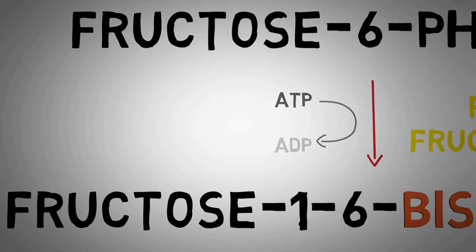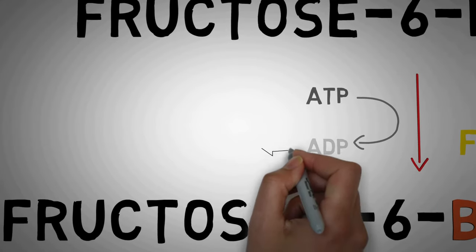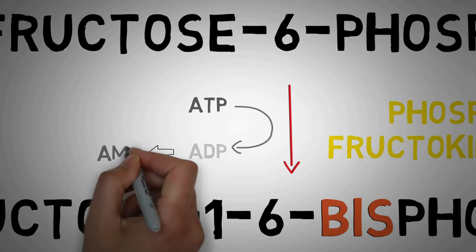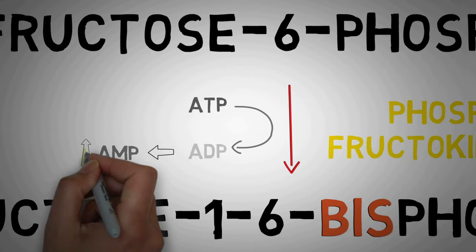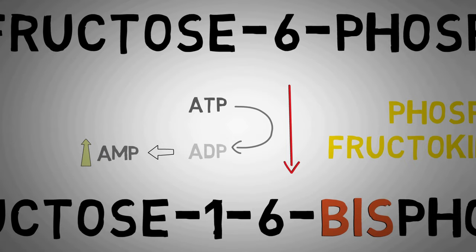When our energy stores are low, this increases the AMP levels in the cell. Raised AMP levels signal the enzyme phosphofructokinase-1 to increase the rate of reaction. Conversely, if energy stores are high — meaning we have lots of ATP in our cells — this decreases the rate of reaction so that it proceeds at an optimal rate. But there are many other factors that control the rate of this reaction. We will discuss more on the regulation of glycolysis at the end of this video.